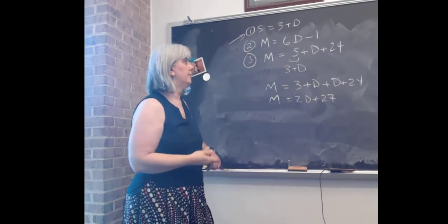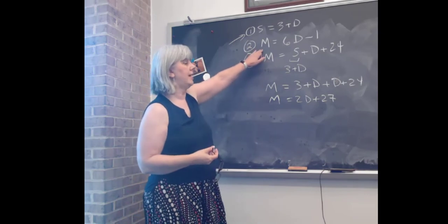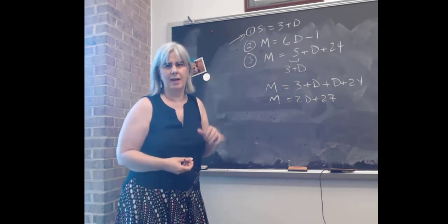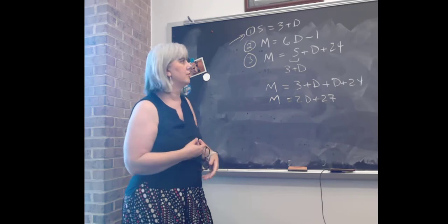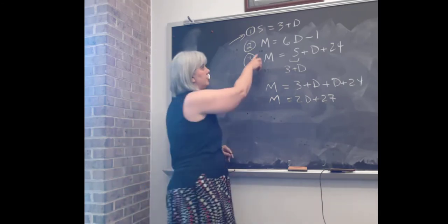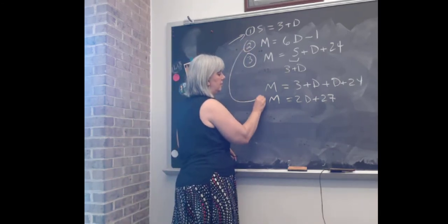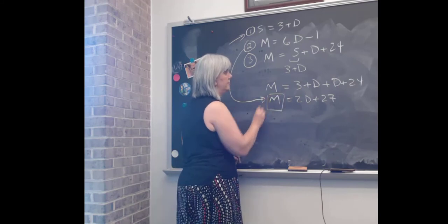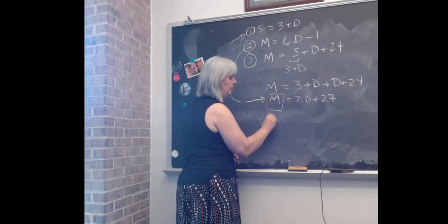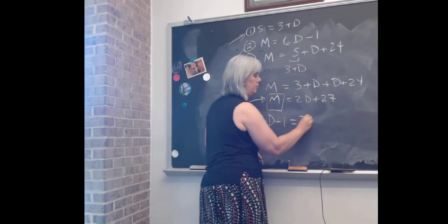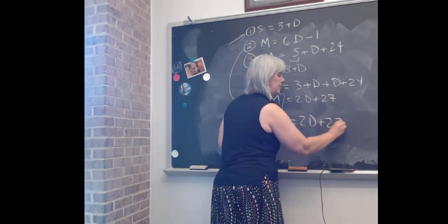What do I do now? Well now I'm going to take the second equation, which I solved for M. I didn't show you that, but that's okay. I'm going to substitute that in for this M. So I have 6D - 1 = 2D + 27.